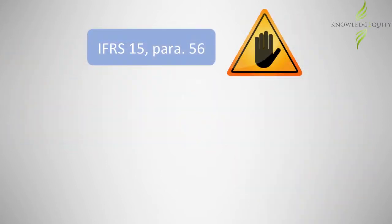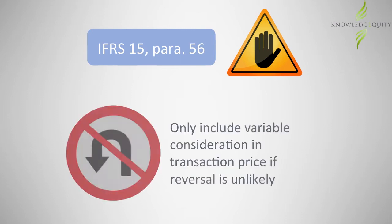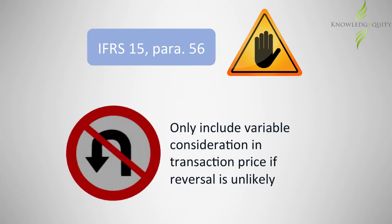IFRS 15 paragraph 56 contains an important requirement relating to variable considerations that can be included in the transaction price. The amount is restricted to only that which is highly probable that a significant reversal in the amount would not occur. To recap, where a contract includes a variable consideration, the transaction price can be determined using either the expected value method or the most likely method.